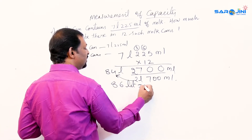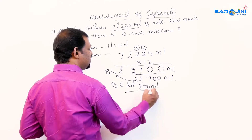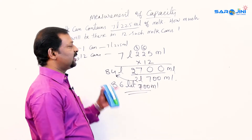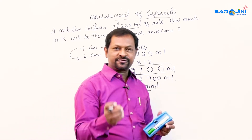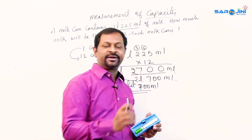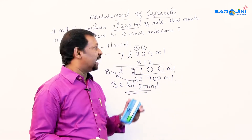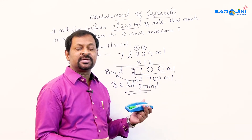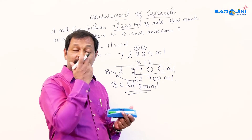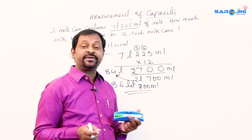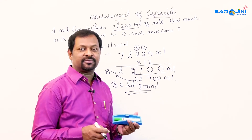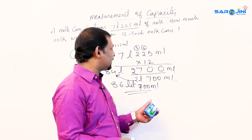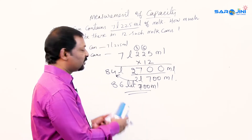Adding those 2 liters to 84 liters gives 86 liters 700 milliliters as the final answer. When a quantity is given for one item and you are asked for more items, that is the unitary method and we use multiplication.